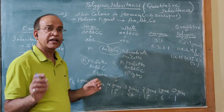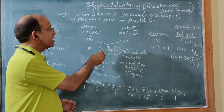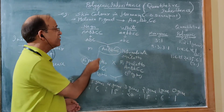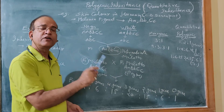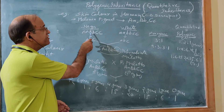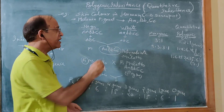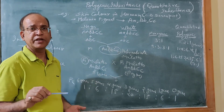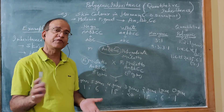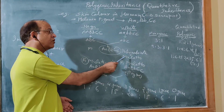When a Negro and a white individual marry, in the F1 generation an intermediate skin color is produced. The F1 individuals have three dominant genes producing melanin pigment — compared to six dominant genes in the Negro parent and zero in the white parent. These intermediates are called mulattoes.